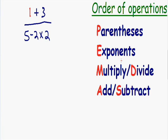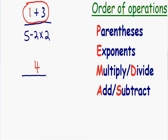Remember what I said at the beginning of this video — whenever you have a fraction you want to deal with the top and the bottom separately. Before I simplify the bottom of this fraction I'm going to deal with the top. In the top we have one plus three. One plus three is equal to four. The rest of the expression stays exactly the same. In the bottom, or the denominator, we have five minus two times two.